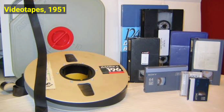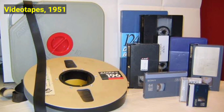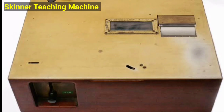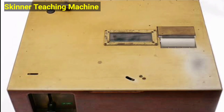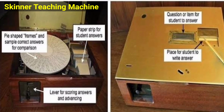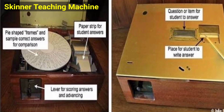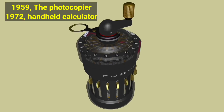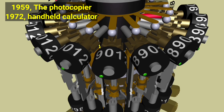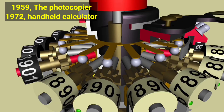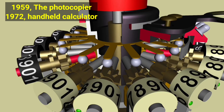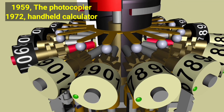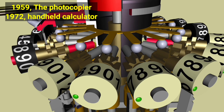During the 1960s the overhead projector was used for interactive classroom discussion between students and teachers. Videotapes arrived on the scene in 1951, creating a new and exciting method of instruction. The Skinner teaching machine produced a combined system of teaching and testing, providing reinforcement for correct answers so that the student can move on to the next lesson. Later on in 1959, the photocopier was introduced. Also in 1972, the handheld calculator entered the classrooms, allowing for mass production of material on the fly and quick mathematical calculations.